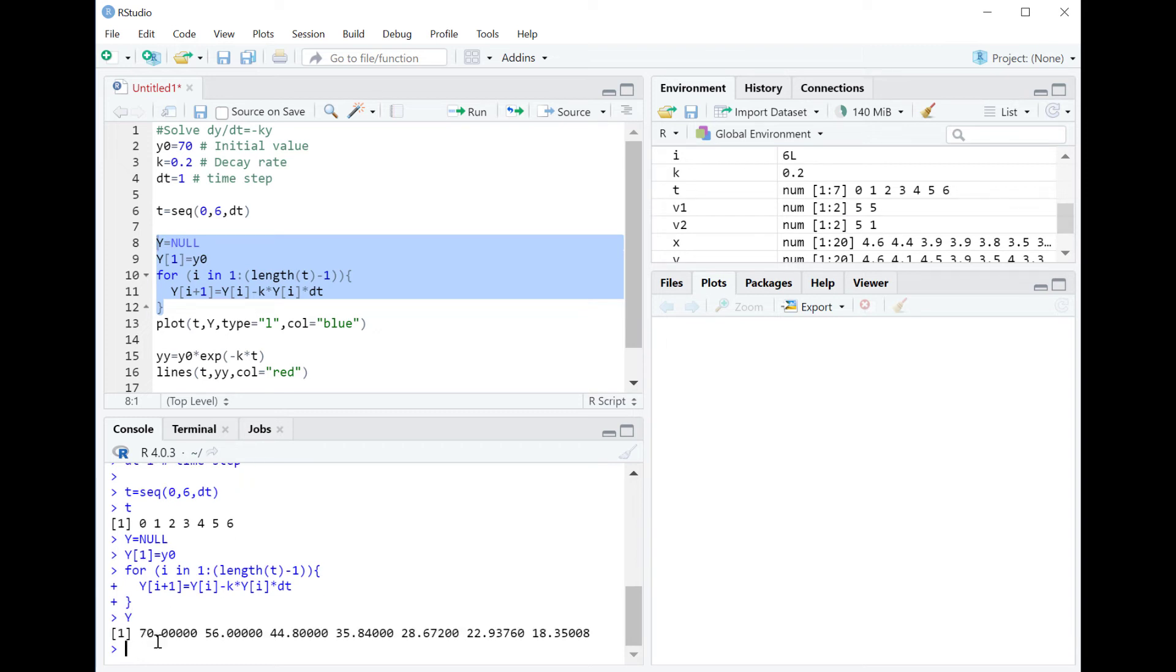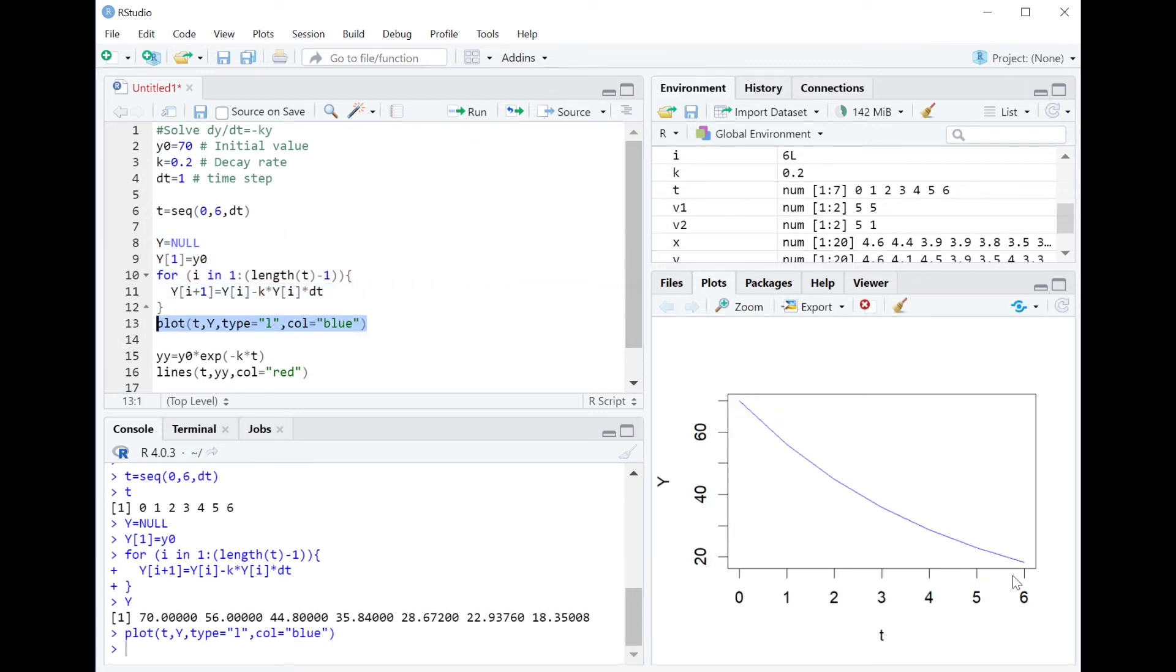And we can also see what's in the output of y. So this is the amount of caffeine at time 0, time 1, 2, 3, and up to 6 hours. And then we can plot what we have in y versus t, like this.